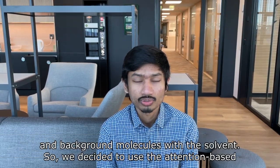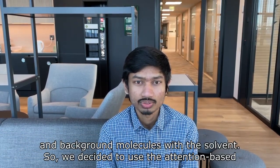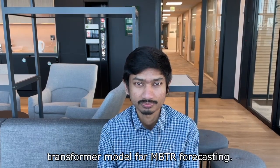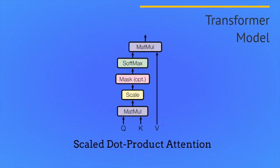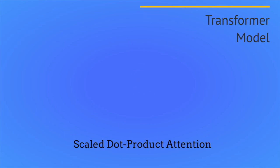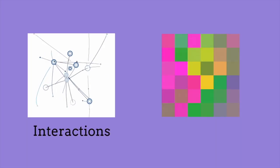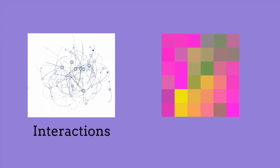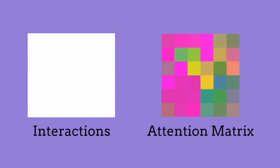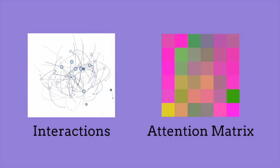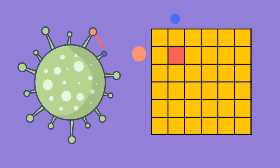So we decided to use the attention-based transformer model for MBTR forecasting. The transformer model is based on a multi-head self-attention mechanism, in which each token of an input sequence is compared to other tokens to gather and learn dynamic information over time. In this way, the model can identify and learn important interactions within columns inherently.